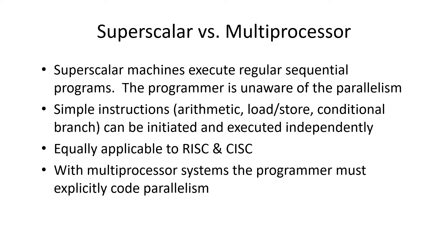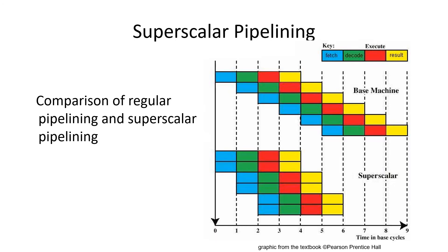Macro-parallelism is where the programmer has to do something explicit to make parallelism happen — for instance, multi-core or multi-processor systems where the programmer has to create multiple threads to take advantage of it. The top of this diagram shows the pipelining diagram we've seen before, where at any one time the processor is fetching one instruction, decoding another, executing one, and showing the results — fetch, operand fetch, execution, and result store.